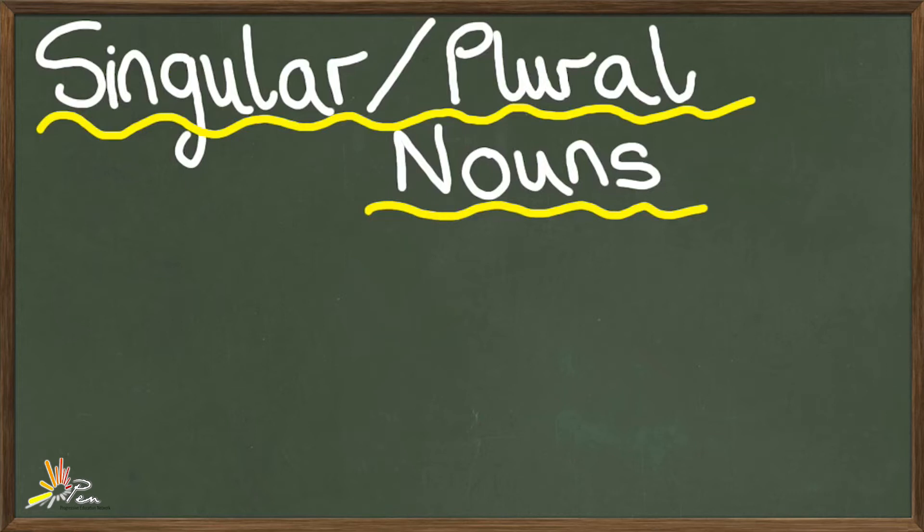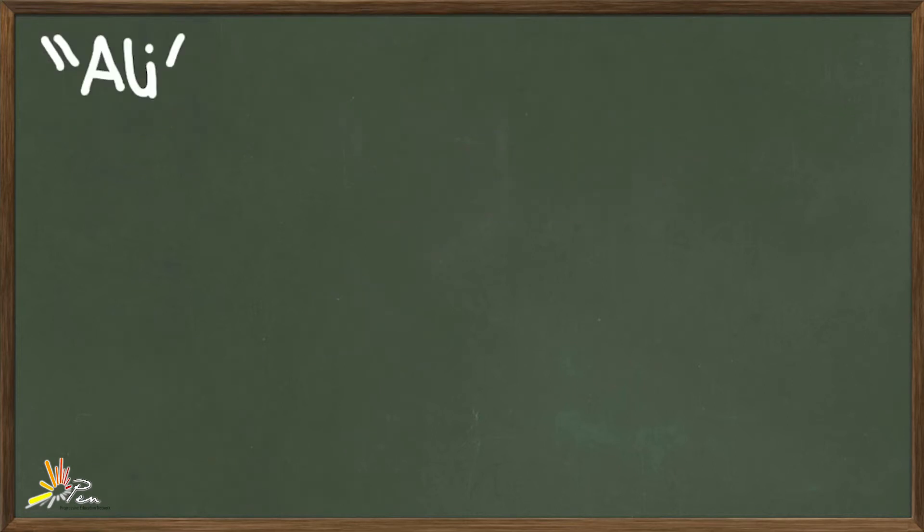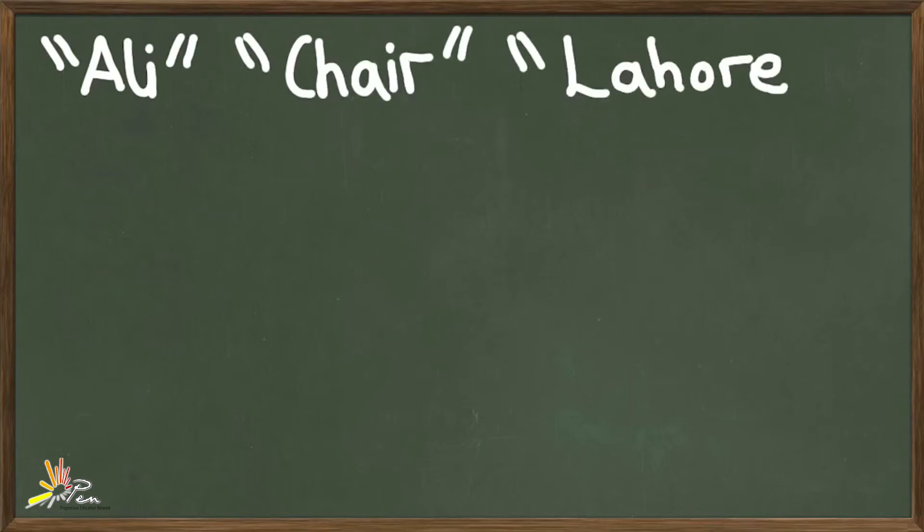A noun is any word that is a thing, place, or person. Ali, chair, Lahore are all examples of nouns.